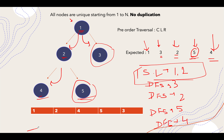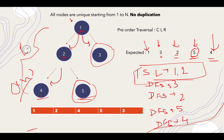Since we iterate through all nodes exactly once, the time complexity is O(n). The space complexity is O(log n) by virtue of the recursion stack, where log n equals the depth of the tree.